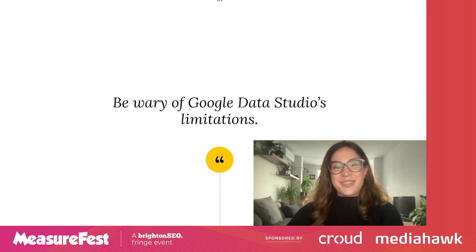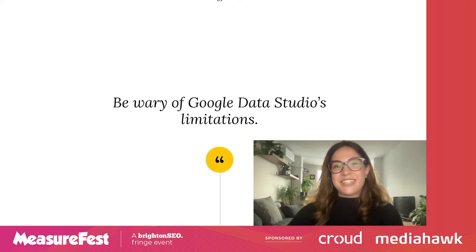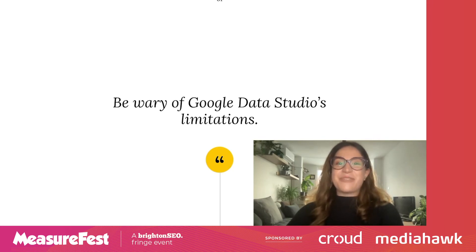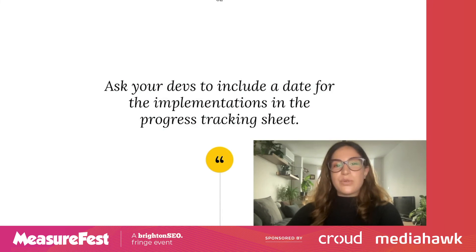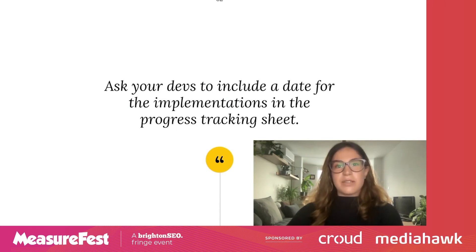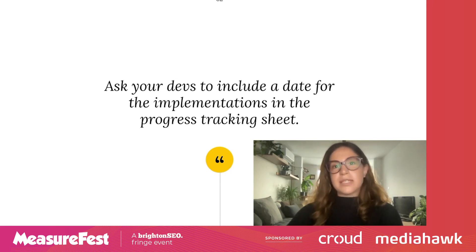Be wary of Google Data Studio limitations — I cannot stress this one enough. While you may want to view 10 competitors or even all of your competitors' performance in a single page, you might have to reconsider this. If you need to blend data sources, you are limited to up to five. Errors in Data Studio are also very common, so make good friends with the idea of troubleshooting. My best advice is to use version control to avoid messy situations during client calls. Also try to get your devs to include a date for implementations in the progress tracking sheet — by blending this with the Chrome UX report data, you can see whether your changes have made an observable impact on the site's reported page experience.